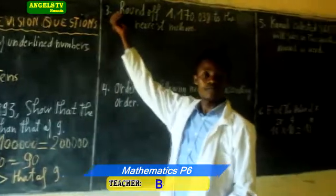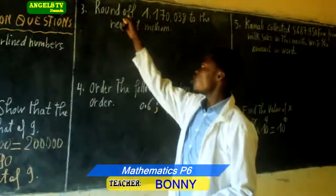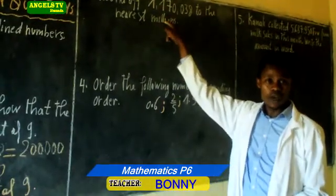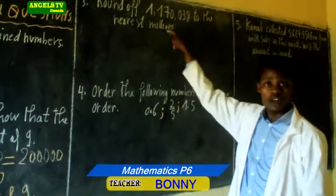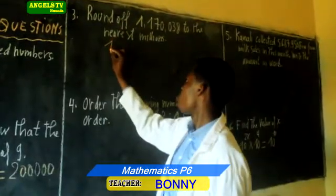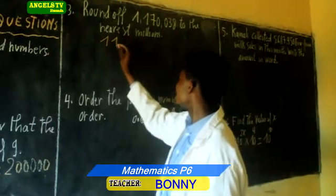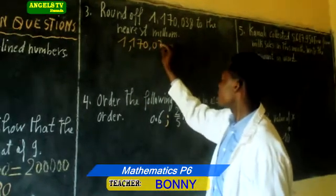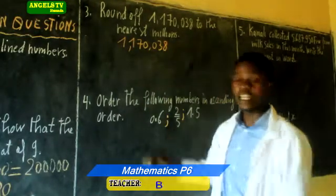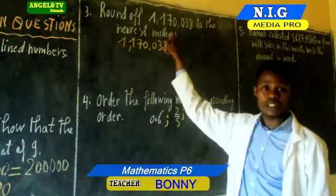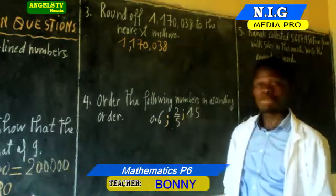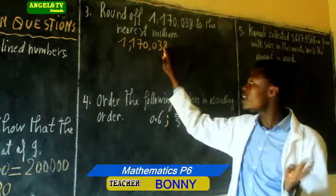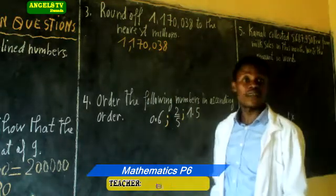Let us move on to number 3. Question number 3 is saying: round off this number to the nearest millions. We are going to round off 1,170,000.38 to the nearest millions. Firstly, we are going to find the required place value. To get the required place value, we identify the number which belongs to the place value of millions.